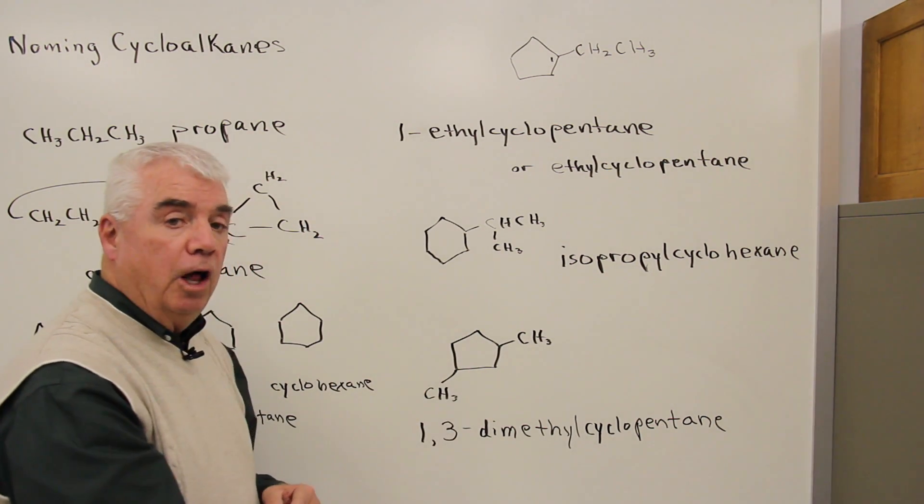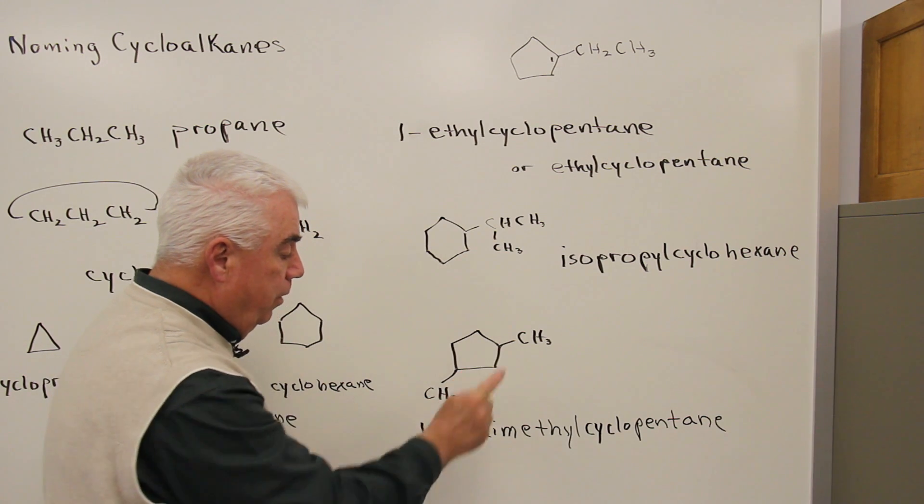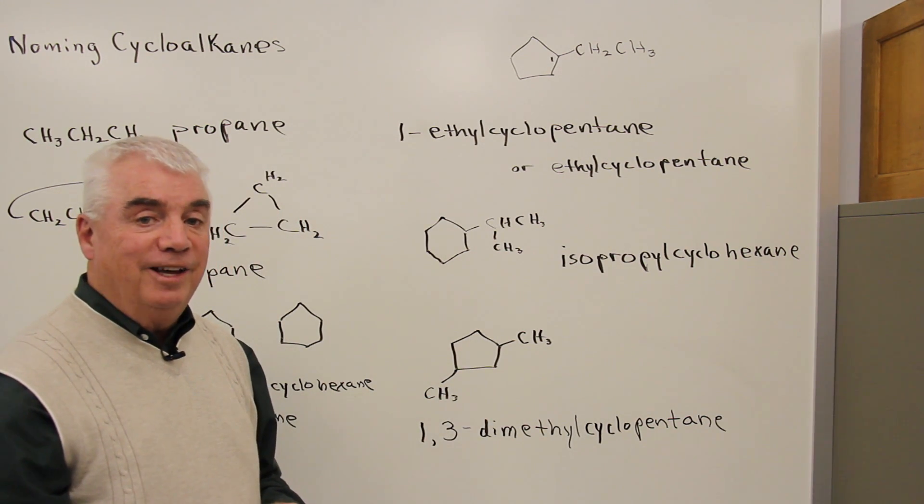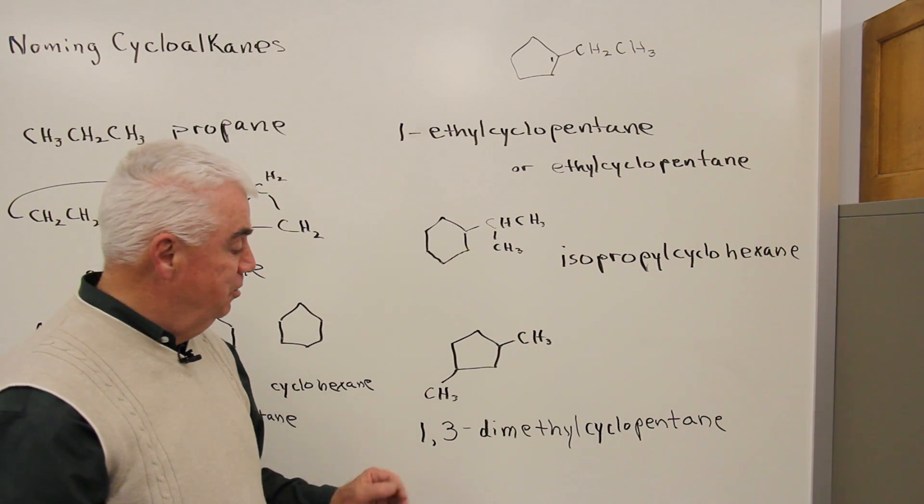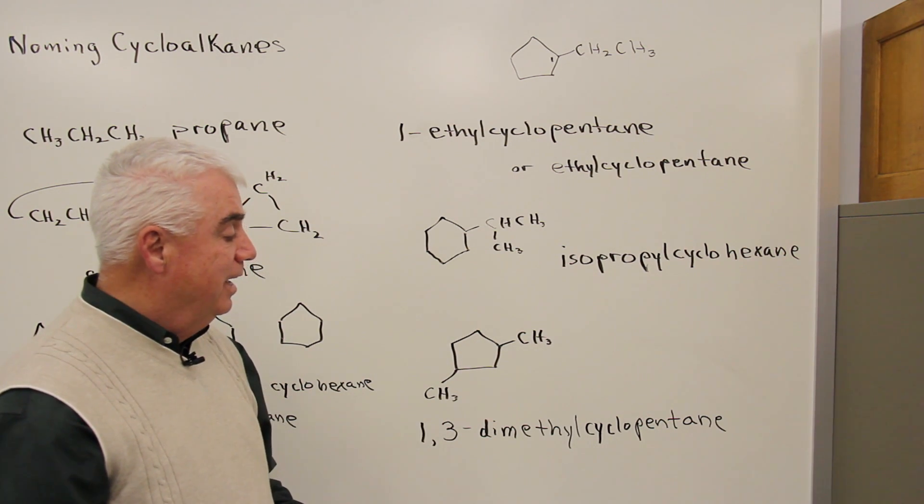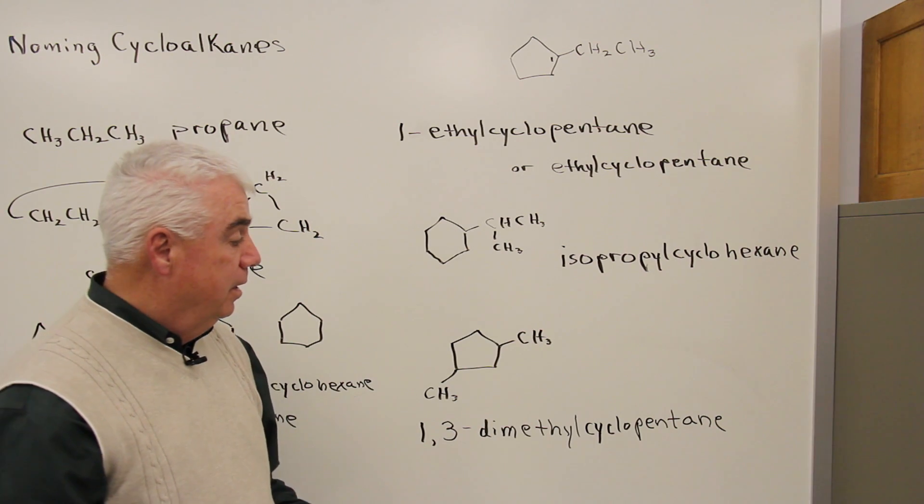But if I go counterclockwise, one, two, three, I've got groups at one and three. And according to the IUPAC system, the lowest numbers wins. This is one, three dimethyl cyclopentane.